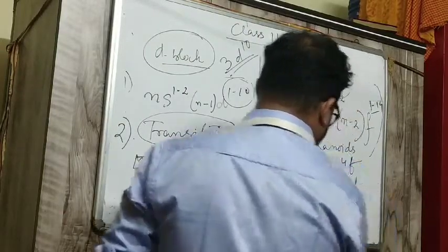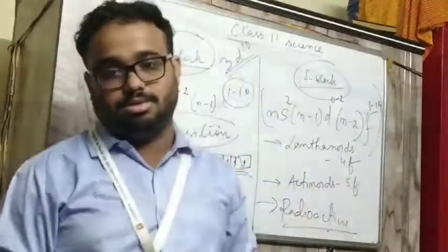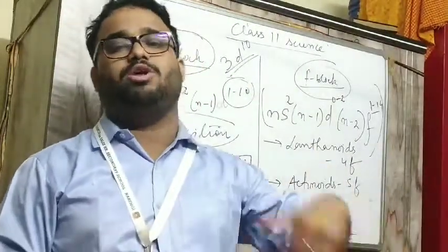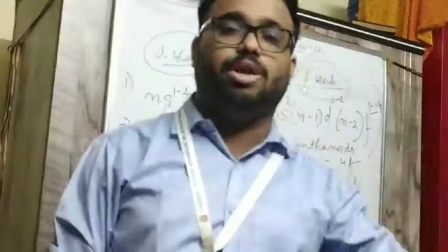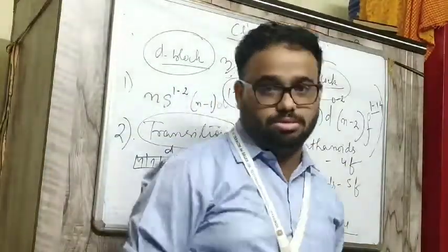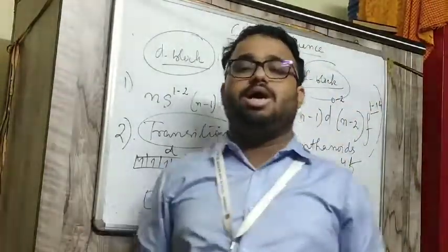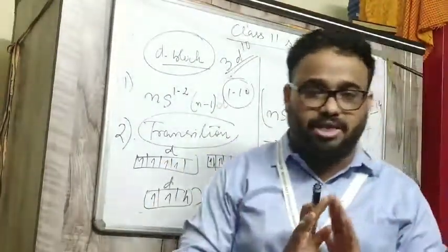Maximum of f block elements are radioactive in nature, and the elements which come after uranium are called trans uranium elements. So this is a short summary of d block and f block. So we have studied about s block, p block, d block and f block, and with this the introduction part is over.